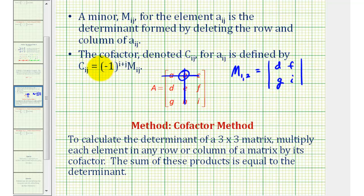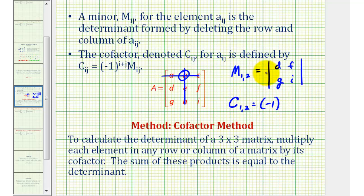Next, the cofactor for any element using capital C is equal to negative one raised to the power of i plus j, where i is the row and j is the column of the element, times its minor. So the cofactor of element B in row one, column two would be C sub one comma two equals negative one to the power of one plus two — the third power — times its minor m sub one comma two.